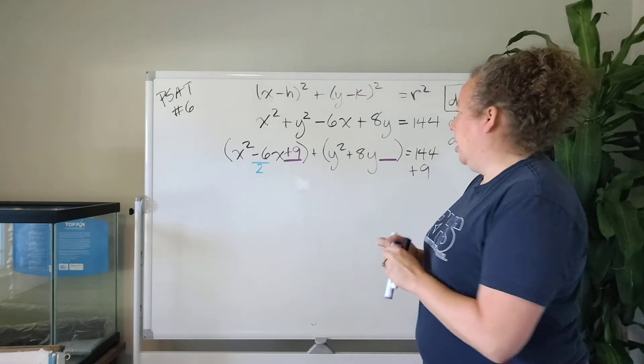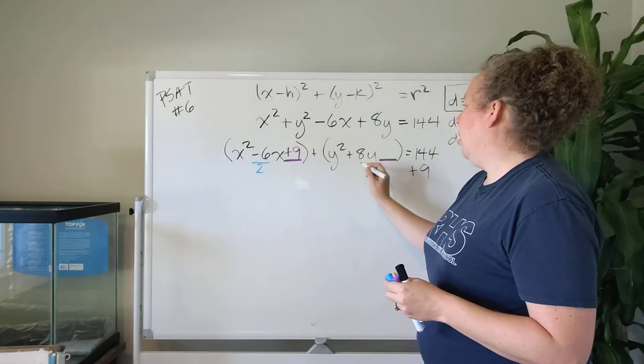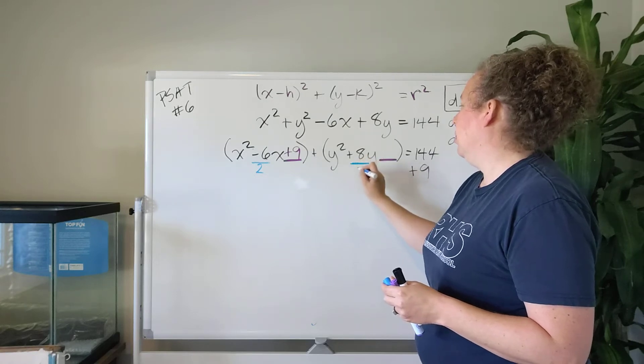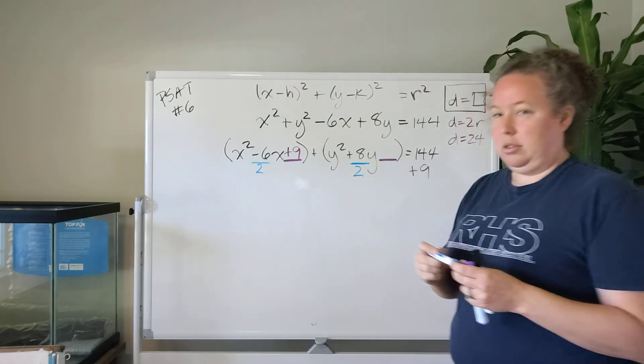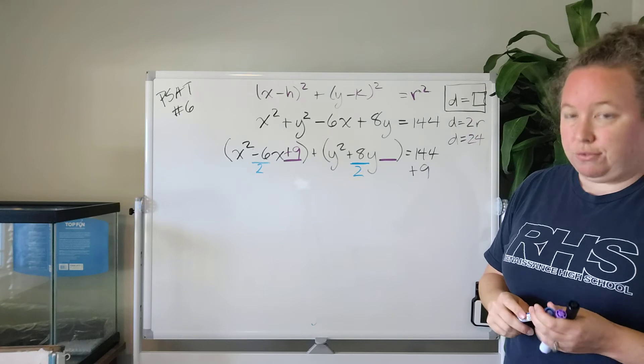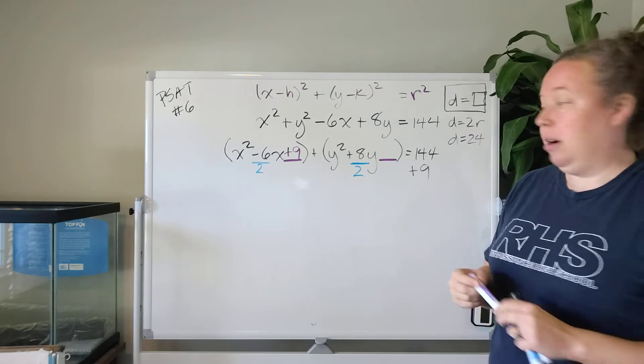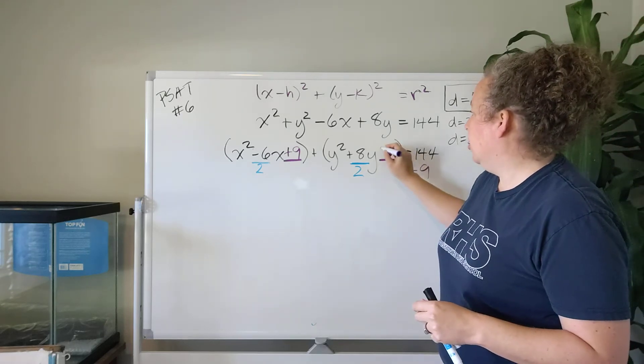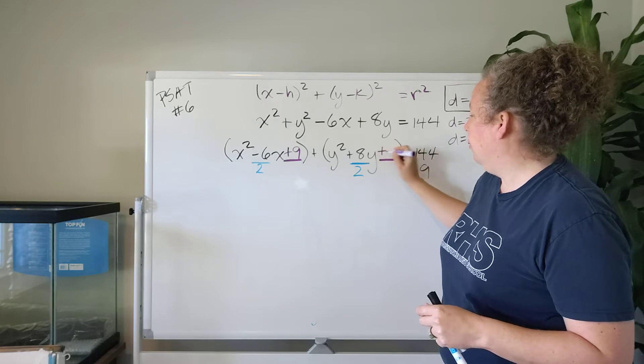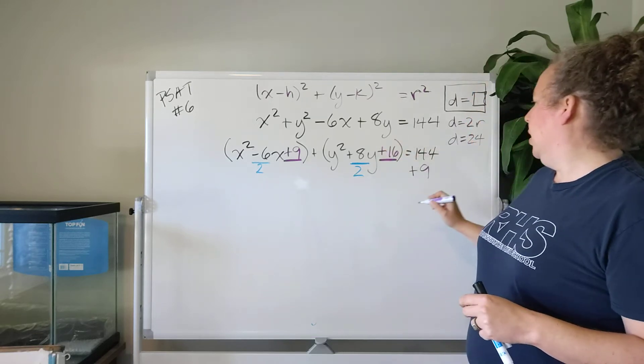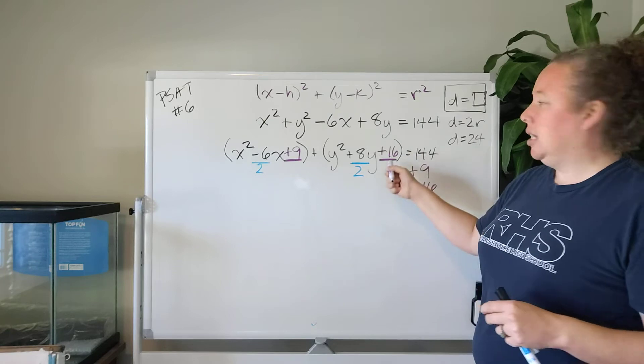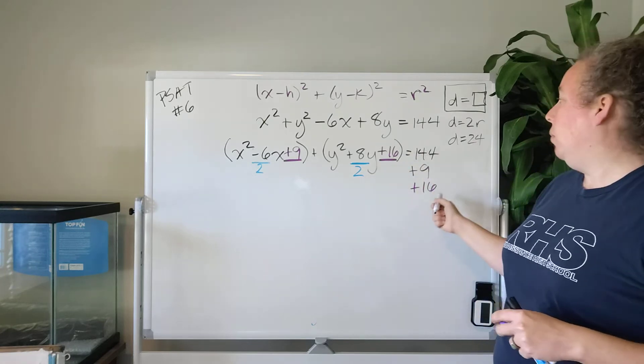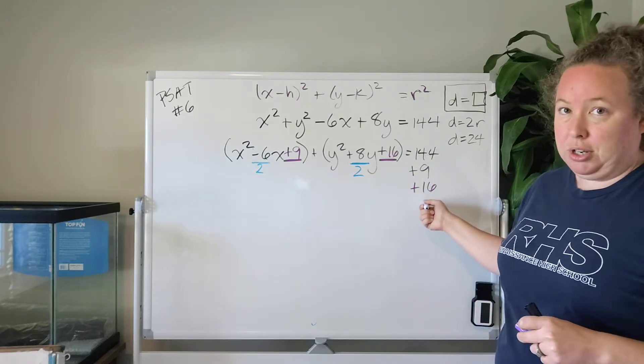We're going to do the same thing again on this side. We are going to divide 8 by 2 which is 4 and then square it. And so this is going to be 4 squared which is plus 16. And if we add 16 on this side of the equation we have to add it on this side of the equation.